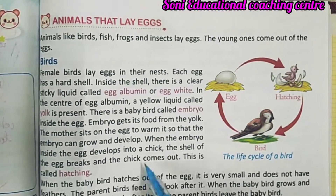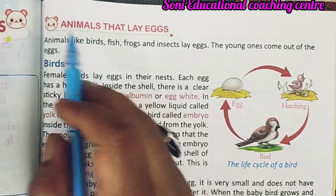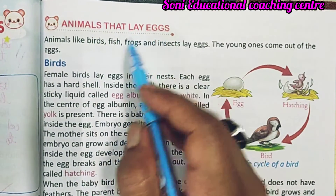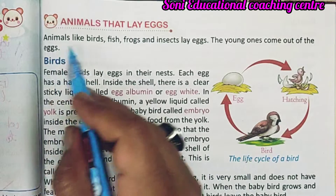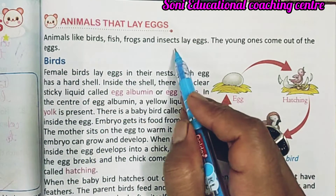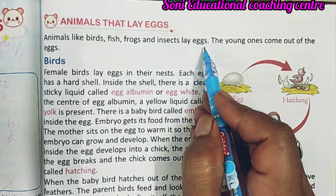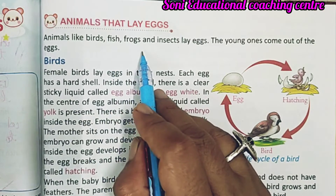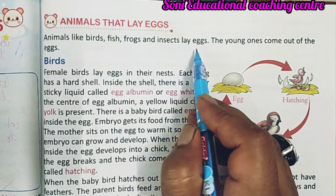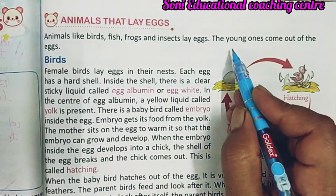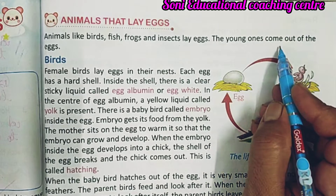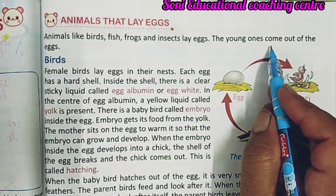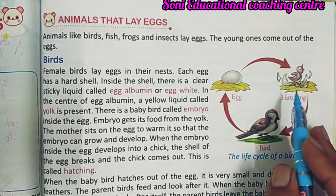Animals that lay eggs: animals like birds, fish, frogs, and insects lay eggs. जानवर जैसे पक्षी, मछली, मेंढक और insects — ये सभी अंडे देते हैं। The young ones come out of the eggs — और उनके बच्चे अंडों से निकलते हैं।